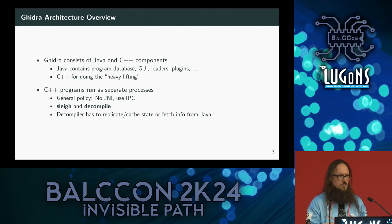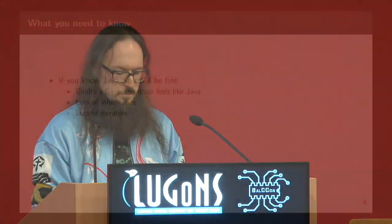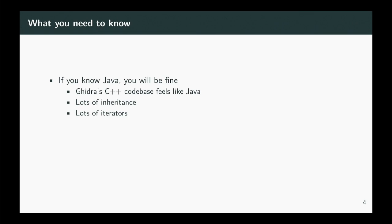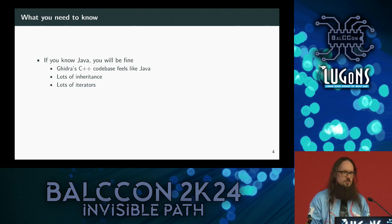They use inter-process communication — they open a pipe between the program and Java and communicate back and forth, sometimes binary, most of the time in XML. This means the decompiler has to replicate and cache the state already in Ghidra, because the decompiler doesn't have it on its own. If you want to work with the decompiler API, it's C++, but if you know Java you'll be fine because it's very much written like Java. It has lots of iterators and inheritance, and uses C++11 — no special modern C++ features needed.